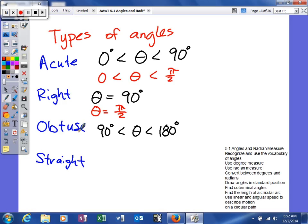An obtuse angle, be careful in the definition, it's between 90 degrees and 180. So it won't go over 180. So this will be pi halves to pi.